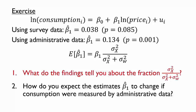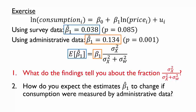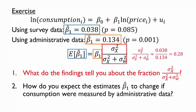Let's start with the first question. We'll need to think carefully about what each term in the attenuation bias formula means. The first term is the expected value of the estimated beta 1 when we have an independent variable measured with error. We don't know this expected value for certain, but we do have one estimate of beta 1 using an error-prone independent variable — that estimate comes from the survey data, giving us 0.038. The next term is the population parameter beta 1. Our best guess at this is an estimate not subject to attenuation bias — assuming the administrative data are accurate, the second estimate of beta 1 fits the bill. The remaining part of the formula is the fraction we're interested in, so we can approximate that fraction by comparing our two estimates. We find that the fraction is about 0.28.